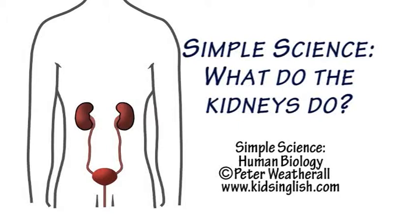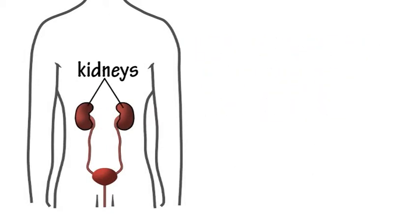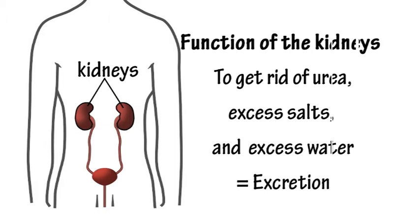What do the kidneys do? Humans have a pair of bean-shaped organs called kidneys whose job it is to remove urea, excess salts and excess water from the blood, producing urine in a process known as excretion.